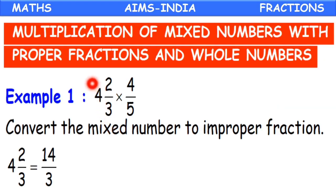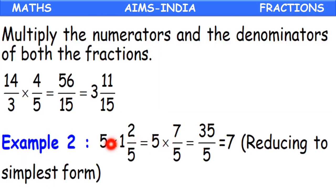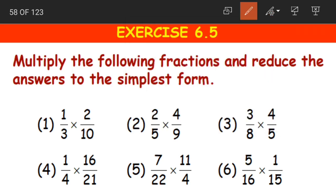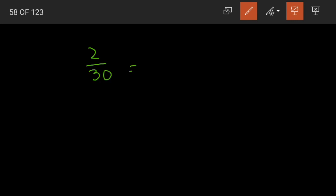So children, that was multiplication of a mixed fraction by a proper fraction and also by a whole number. Next we have an exercise where we need to multiply the following fractions and reduce the answers to the simplest form. We have 6 questions; I will explain 2 and the remaining 4 are to be done by you. Coming to question 1: 1/3 into 2/10. 1×2 is 2, divided by 3×10 is 30.